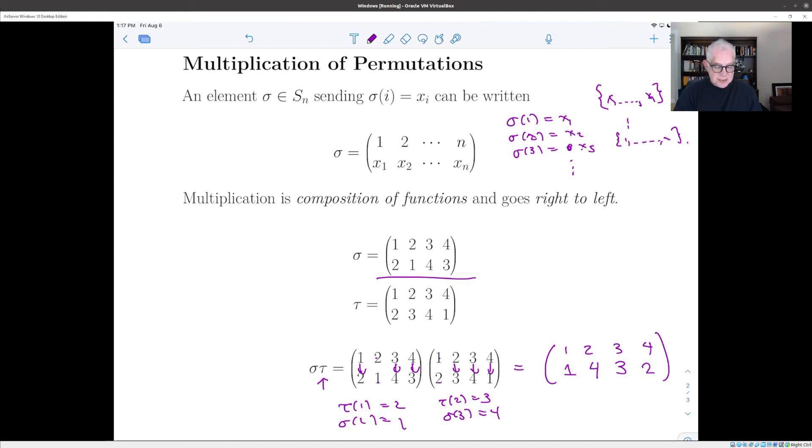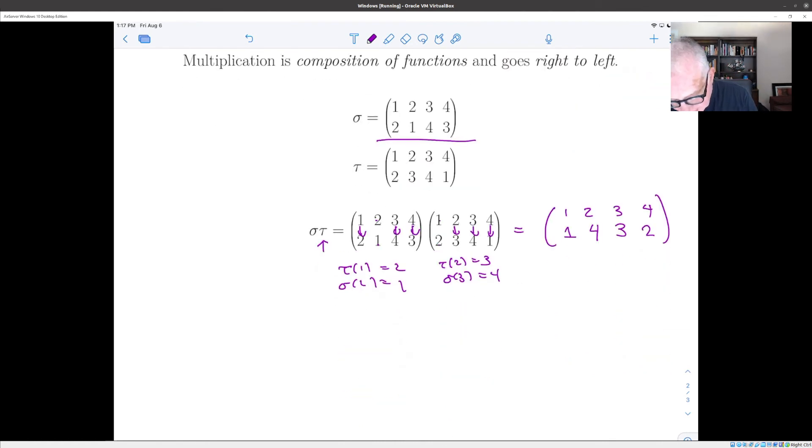And if you look here, you see that this is again a permutation of the set one, two, three, four. Maybe just for the sake of one other calculation, what's the inverse of this permutation, which is sigma? What's the inverse of it? Well, one way to work out the inverse is to flip the rows and then sort them.